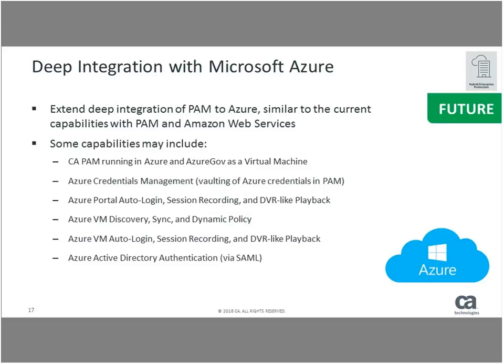We're also extending our virtualization and cloud support. CA Privileged Access Manager already offers a lot of capabilities around cloud and virtualization platforms like VMware, VMware's NSX platform, and AWS. The next platform in line is Microsoft Azure — making sure PAM runs in the Azure environment itself, managing the credentials required for Azure, offering session recording with DVR-like playback capabilities, and discovering new VM instances within that platform. This is one of our key differentiators within our product line.